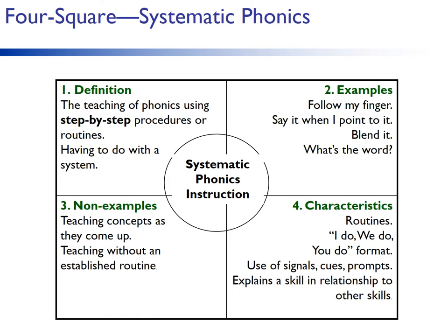This four-square defines systematic phonics. Systematic instruction in phonics is defined as the teaching of phonics using step-by-step procedures or routines — those routines may be the 'I do, we do, you do' format. Examples on the systematic phonics four-square include: follow my finger, say it when I point to it, blend it, what's the word? Non-examples include just teaching concepts as they come up or teaching without any established routines. Please take about 30 seconds to review this and adjust your thinking to see if you have any discrepancies.